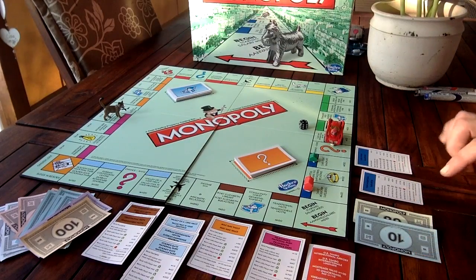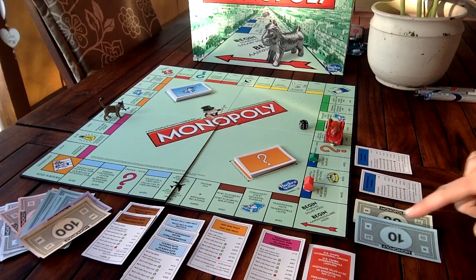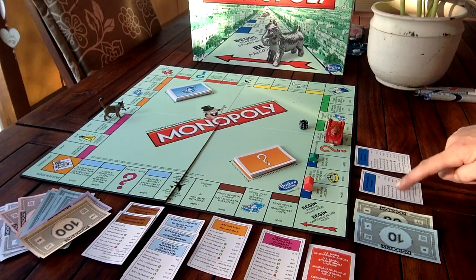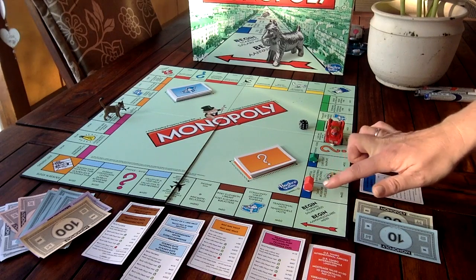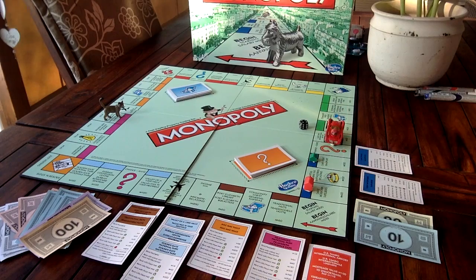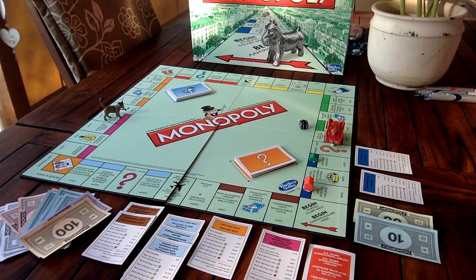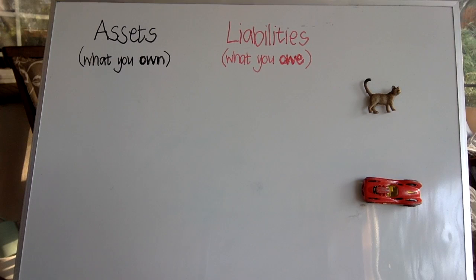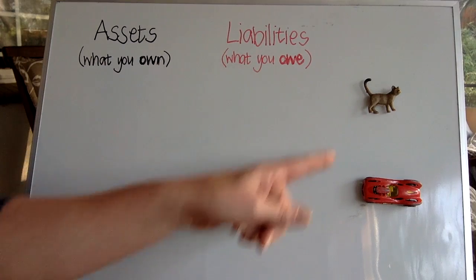That player doesn't have nearly as much — just two notes and only two properties. However, if you notice, the properties are these ones over here: one sitting with a hotel and one with a house. So if you look at those two players, who do you think is actually winning the game? Well, the one who wins is the one who survives the longest, and that would mean the one who has got the most assets. Let's now classify these items as assets and liabilities for each of the two players.